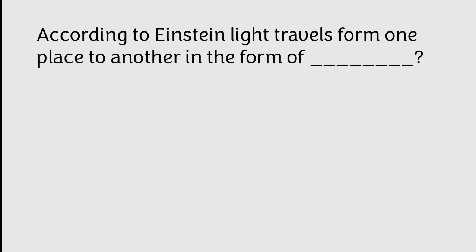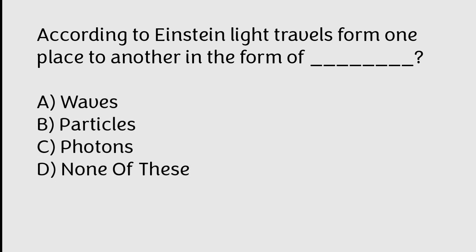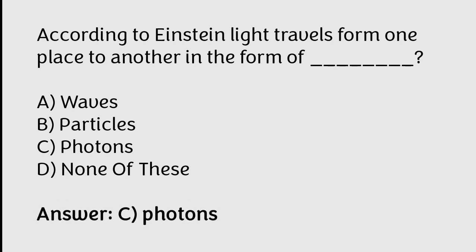According to Einstein, light travels from one place to another in the form of: waves, particles, photons, none of these. The correct answer is Option C. According to Einstein, light travels from one place to another in the form of photons.